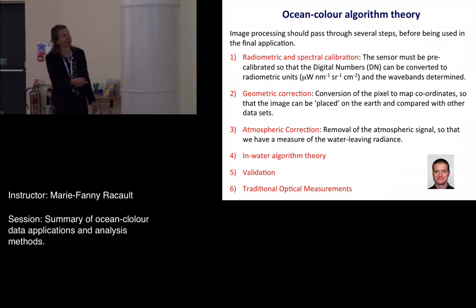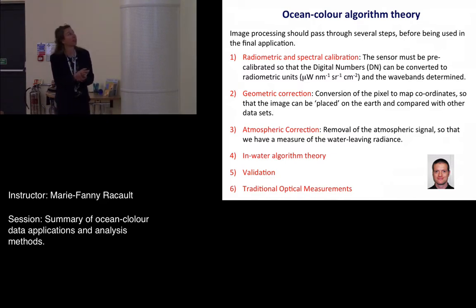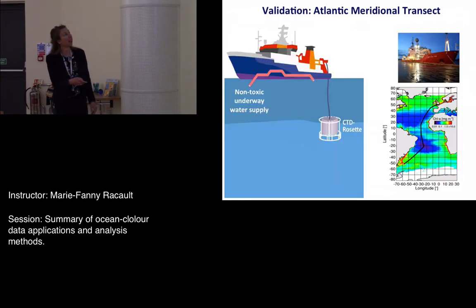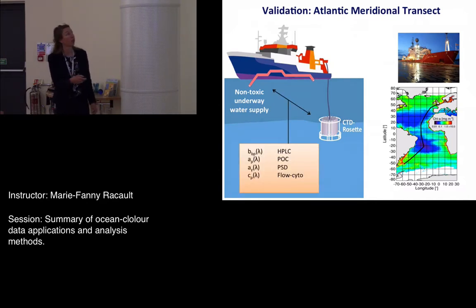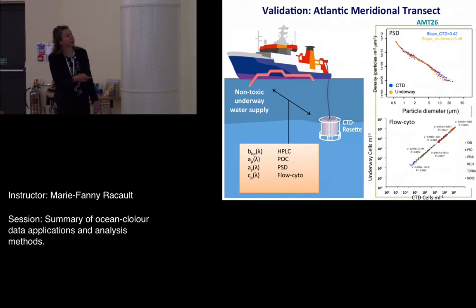Bob gave another lecture going in depth about ocean color algorithm theory, going through each step: radiometric and spectral calibration, geometric corrections, atmospheric corrections, in-water algorithm theory, and validation. He reviewed a few traditional optical measurements and discussed the Atlantic Meridional Transect Program and the different systems and deployments used to collect data for validation of chlorophyll concentration and development of chlorophyll retrieval algorithms.